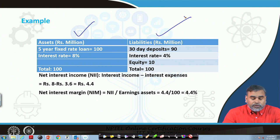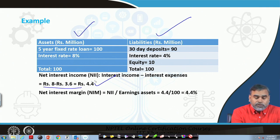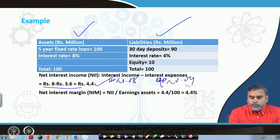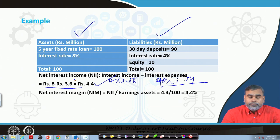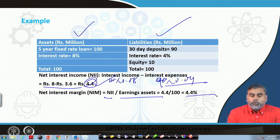Now if you calculate the net interest income: 100 × 8% = 8 million income, minus 90 × 4% = 3.6 million expense, giving a net interest income of 4.4 million. The net interest margin becomes 4.4 / 100 = 4.4 percent.